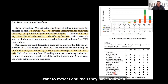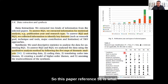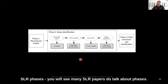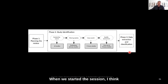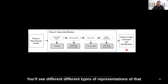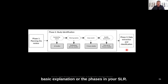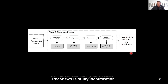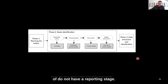They have followed reference 51 for this approach, so if you want to follow something like this you could reference that. You will see many SLR papers talk about phases: phase one, phase two, phase three. Earlier in the session I talked about planning, conducting, and reporting as the different stages. You'll see different representations of these basic phases. In this example, phase one is planning, phase two is study identification, and phase three is data extraction and classification - so phases two and three are like the conducting phase of the SLR.